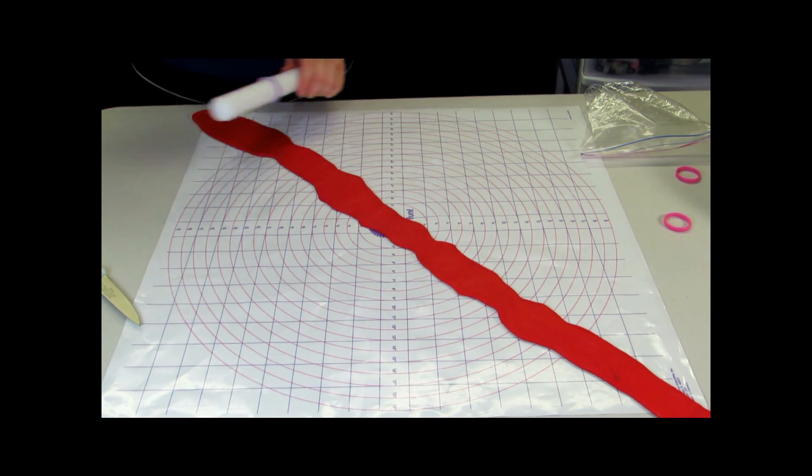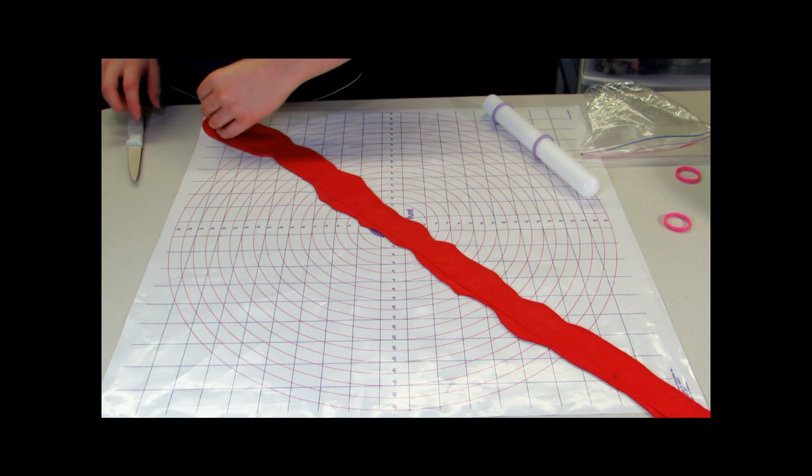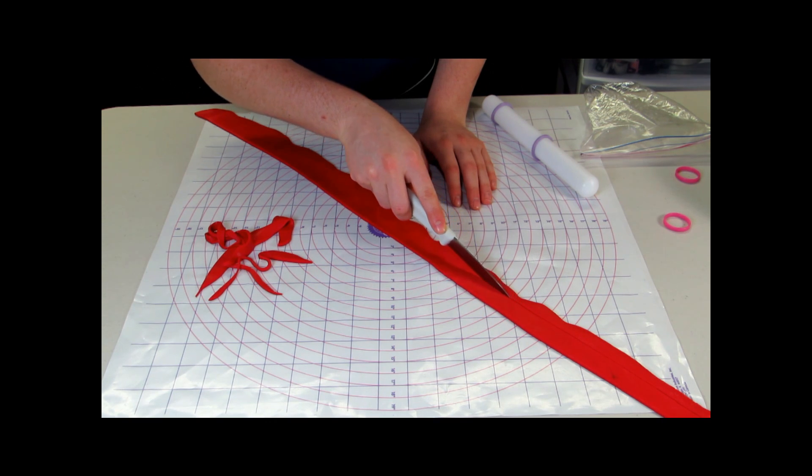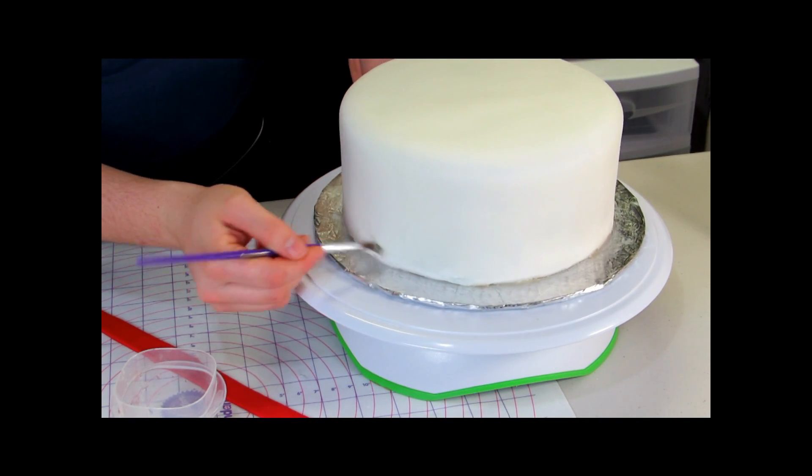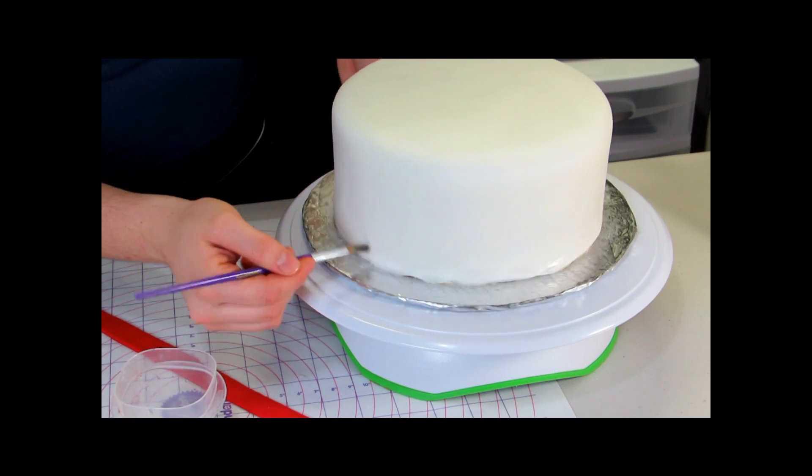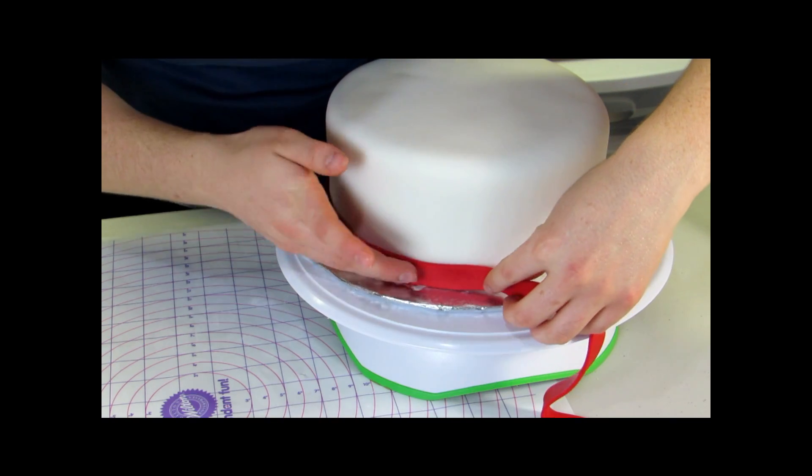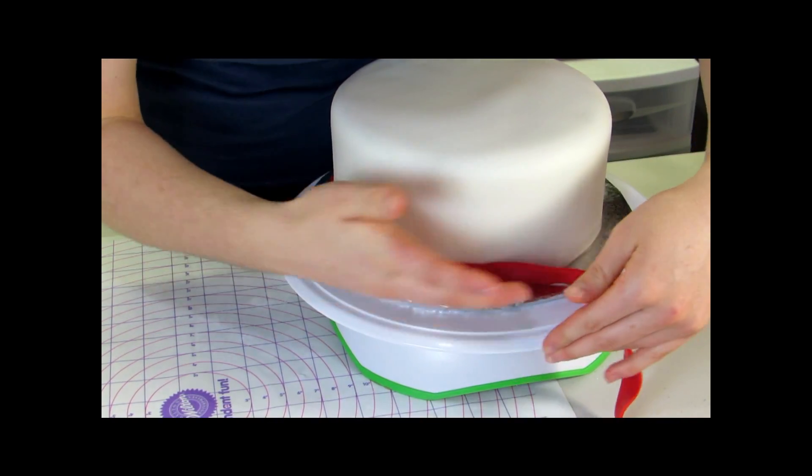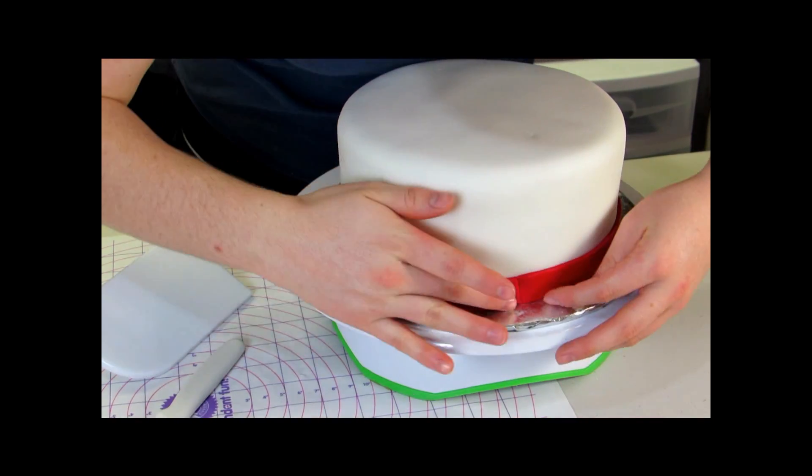So I'm just going to roll that out thin and then trim off the one edge and then trim off the other edge just into about a half inch rectangle. Wet the base of your cake with a little bit of water and then wrap your red fondant ribbon around it. I really like the red ribbon, well any ribbon around the base of a cake. It's really easy but it looks really nice.